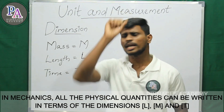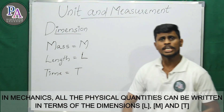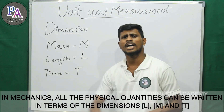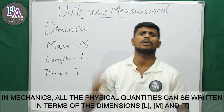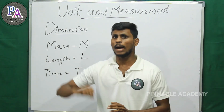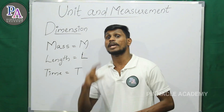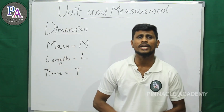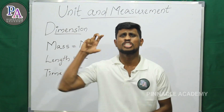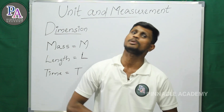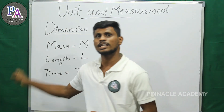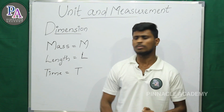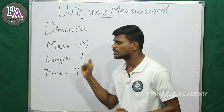If we use the term for length, we use the letter L. If we use the term for time, we use the letter T. We use the term for fundamental physical quantities to be symbolic — M for mass, L for length, and T for time.